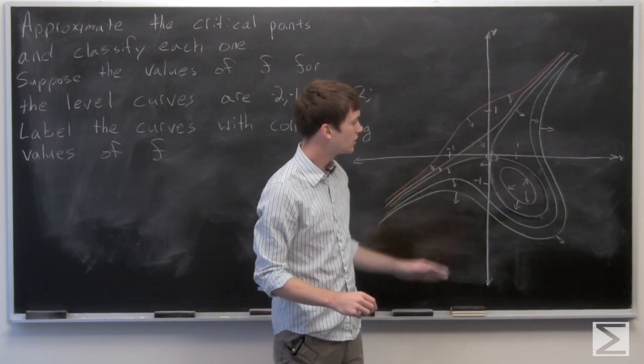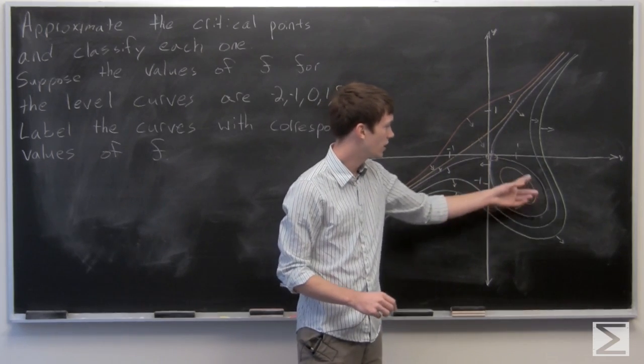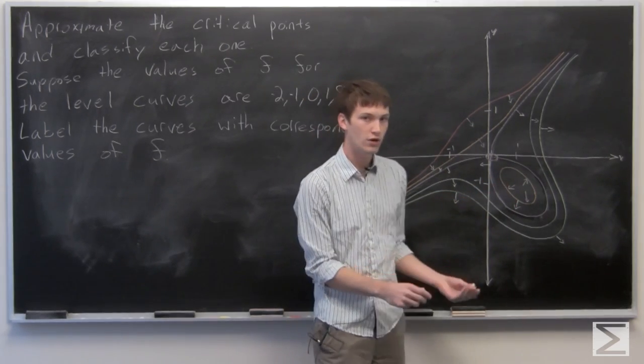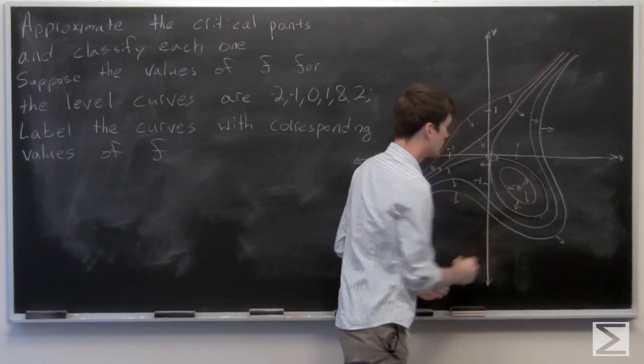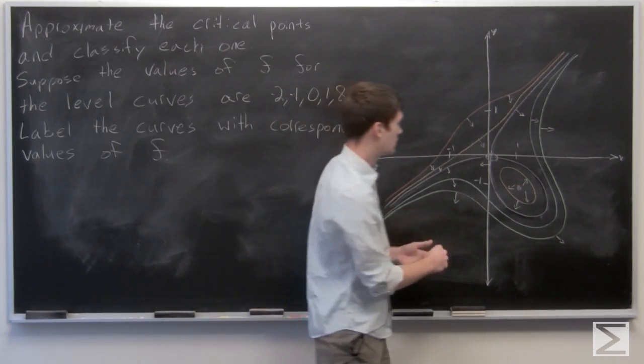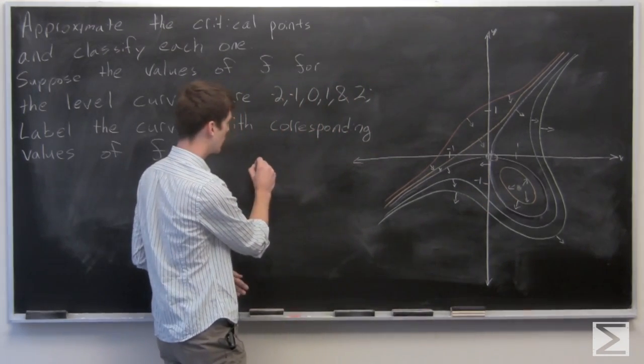It's crossing at the origin. And then there's also an oval right here, which we can approximate its center as being right there, which is more or less at the point 1, negative 1.